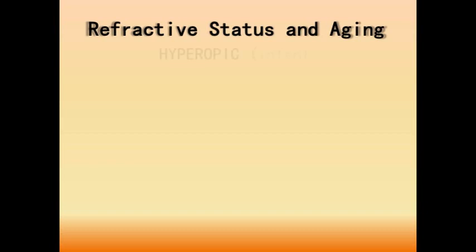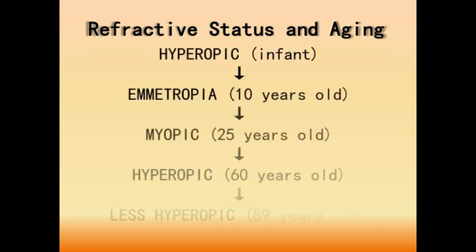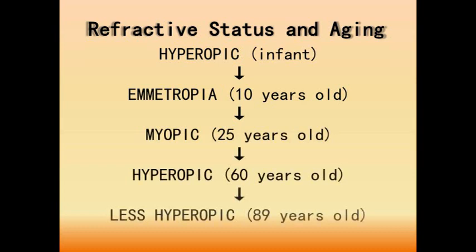The general trend is to begin life with hyperopia and then move towards emetropia around 10 years of age. This progression continues towards a myopic state that peaks around 25 years of age, then shifts back towards hyperopia. Most people in their 60s and 70s are hyperopic, after which a small decrease in hyperopia is seen — likely due to changes in the crystalline lens involving alterations in the refractive index, resulting in a myopic shift.